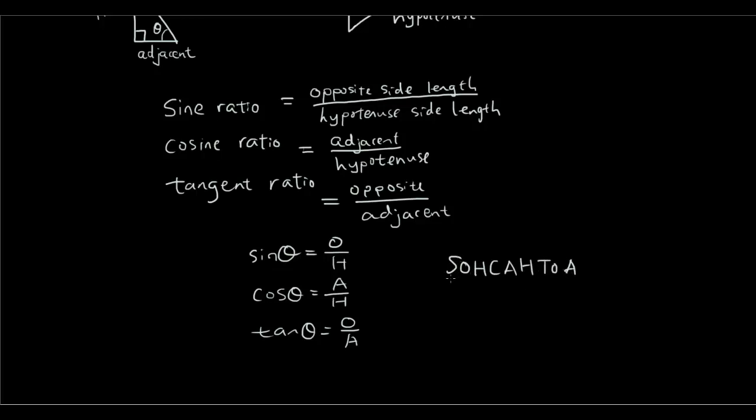And the way that people remember this is by writing the phrase SOHCAHTOA. SOHCAHTOA, as you can see, S means sine, sine equals opposite over hypotenuse, cos equals adjacent over hypotenuse, tangent equals opposite over adjacent. So that's what SOHCAHTOA means, which is a phrase you should memorize.